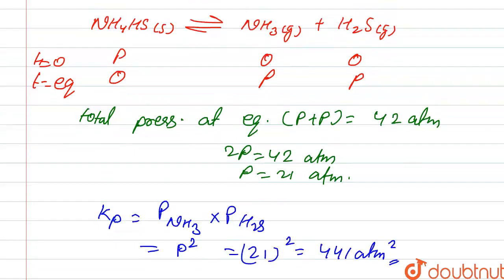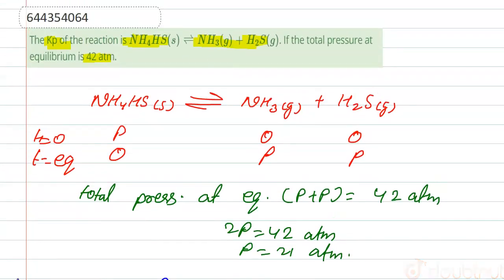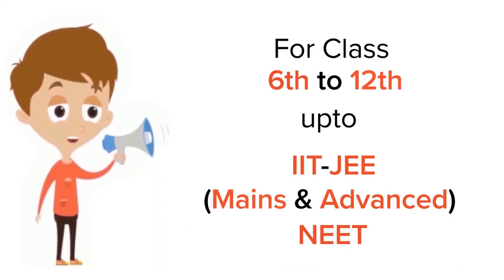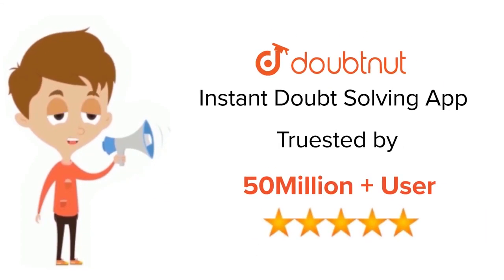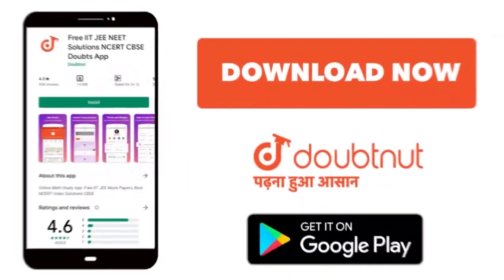So this is the value of Kp for this reaction. Thank you. For class 6th to 12th, IIT-JEE and NEET level, trusted by more than five crore students, download Doubtnet app today.